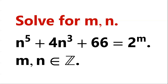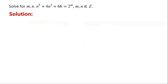Solve for integers m and n: n to the power of 5, plus 4n cubed, plus 66, equals 2 to the power of m. There are two variables in one equation, so there might be more than one solution. How to find them?